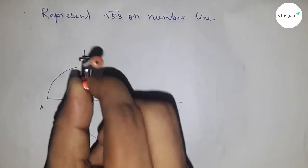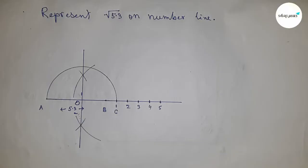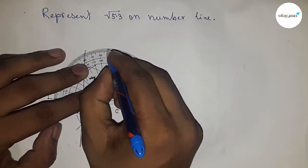This is the semicircle. Next, drawing a 90-degree angle on point B. Drawing a 90-degree angle on point B.